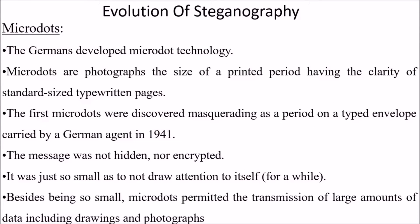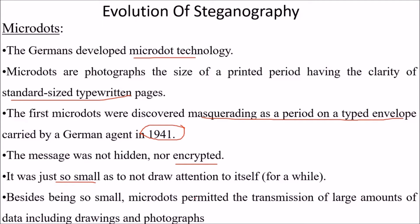Then came micro dots — a technology developed by the Germans. Micro dots are photographs the size of a printed period but having the clarity of a standard-size typewritten page. The first micro dots were discovered masquerading as a period on a typed envelope carried by a German agent in 1941. The message was not encrypted — it was just so small as not to draw attention to itself. Micro dots also permitted the transmission of large amounts of data including drawings and photographs.